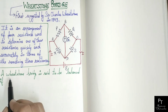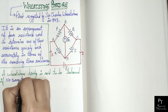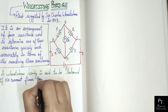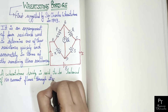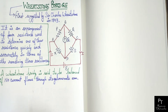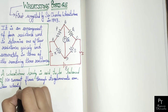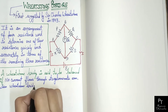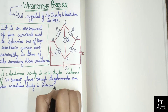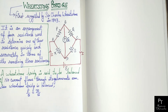A Wheatstone Bridge is said to be balanced if no current flows through its Galvanometer arm. And when the Wheatstone Bridge is balanced, we have P/Q equals R/S. This means when the bridge is in balanced condition, the ratio of P to Q will be equal to the ratio of R to S resistances.